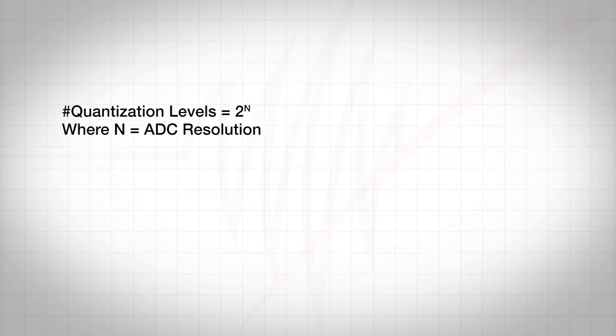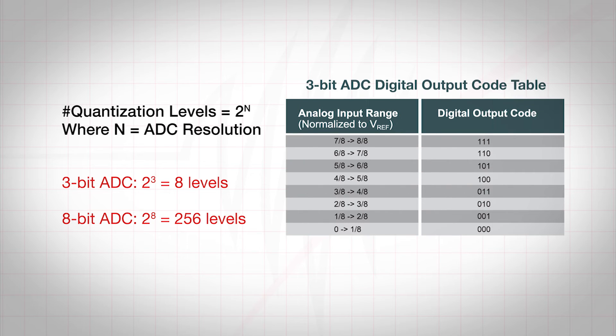Since ADCs use a binary code, the number of levels an ADC can encode to is 2^n. For example, a 3-bit ADC will provide 8 levels and an 8-bit ADC will provide 256 levels.